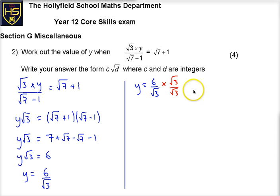Which is going to give me 6 root 3 on top, and then on the bottom it's going to give me root 3 times root 3, which is root 9, which is just 3. So we've got the expression y is equal to 6 root 3 over 3. Not quite done because I can simplify that.